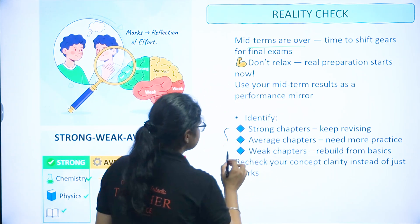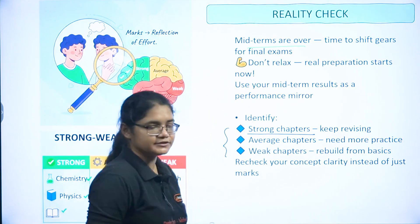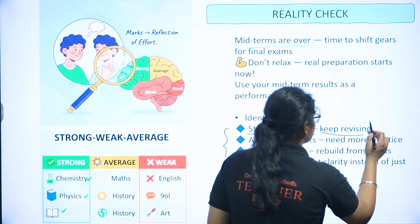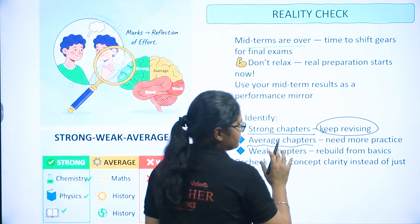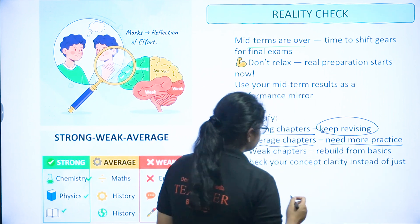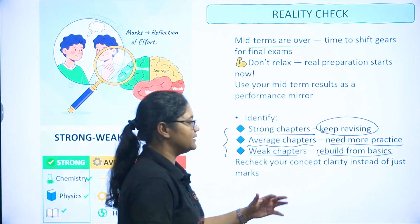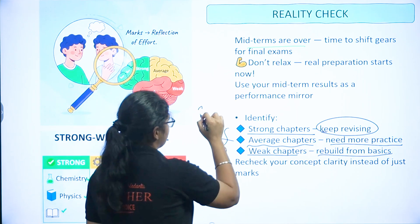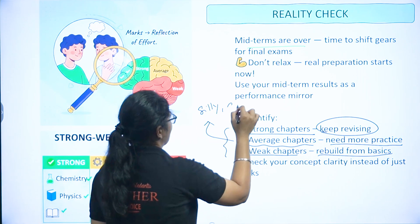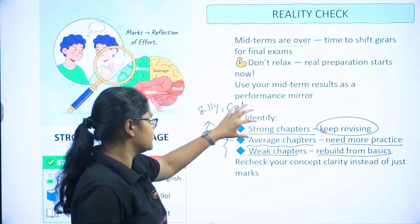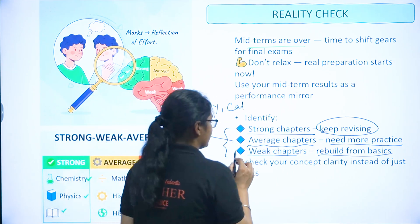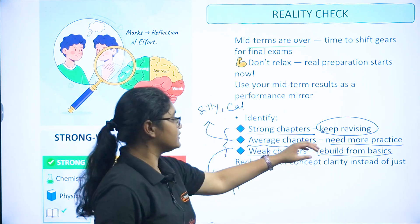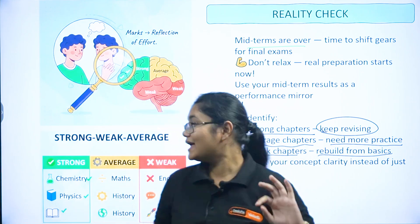Take a proper analysis of your midterm paper and make a list. Write down your strong chapters where you got good marks — keep revising those. Average chapters where you made fewer mistakes — do more practice there. Weak chapters where you made conceptual mistakes — rebuild them from basics. So categorize all chapters into strong, average, and weak for each subject.